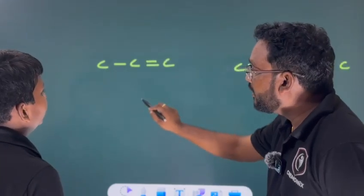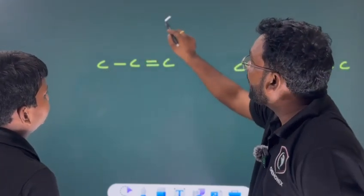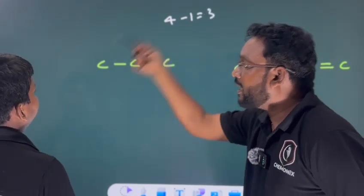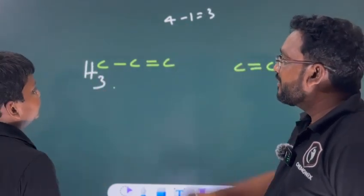Do it. Here, how many bonds are there? 1. So, 4 minus? 1. Is equal to? 3. So, what do you do? H3. That is all right. Do you understand?